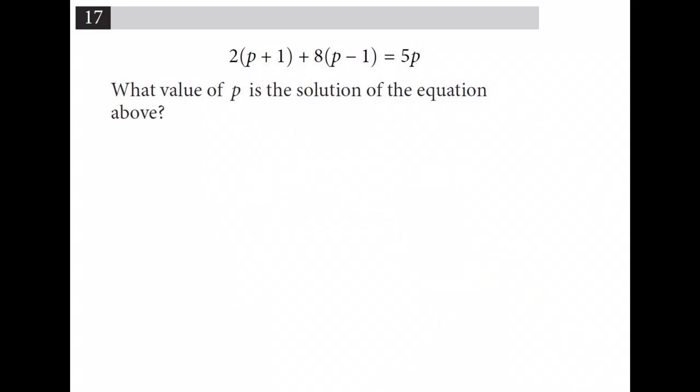Number 17. 2 times the quantity p plus 1 plus 8 times the quantity p minus 1 is equal to 5p. What value of p is the solution of the equation above? The first thing we can do is distribute the 2 and the 8 for these sets of parentheses. This gives us 2p plus 2 plus 8p minus 8 is equal to 5p.